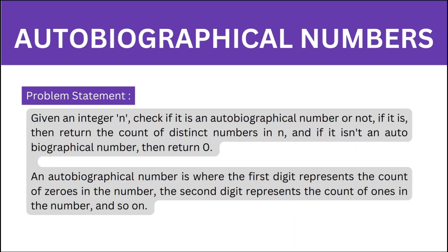First let's see what the problem statement is. Given an integer n, check if it is an autobiographical number or not. If it is, return the count of distinct numbers in n, and if it isn't an autobiographical number, return 0. An autobiographical number is one where the first digit represents the count of zeros in the number, the second digit represents the count of ones, and so on.